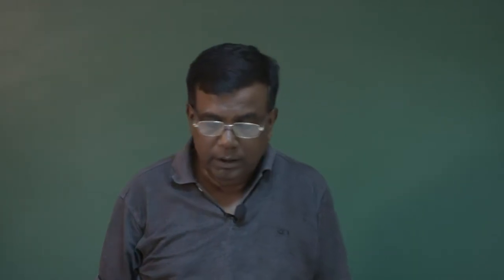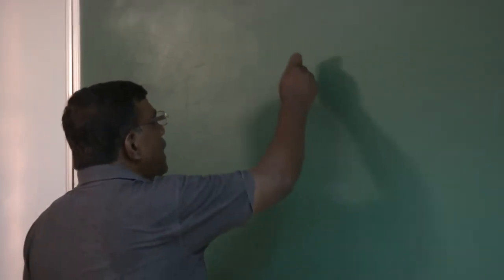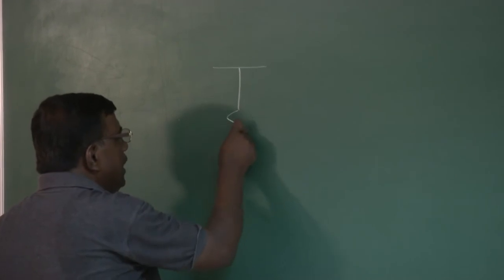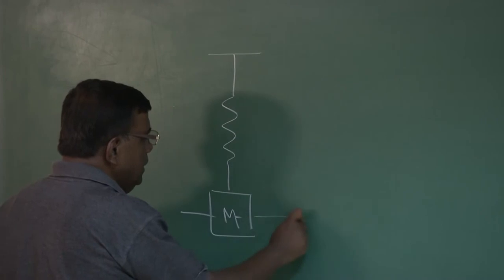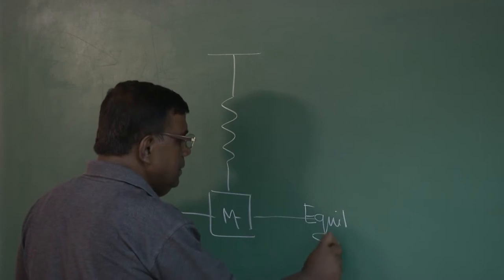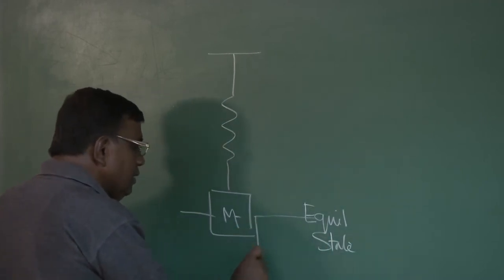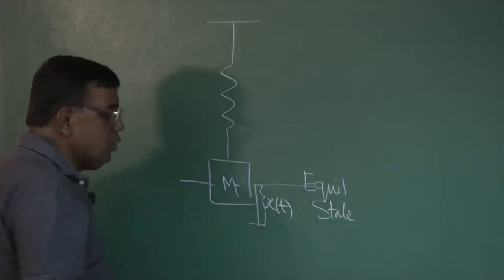Good afternoon friends. We are continuing our discussion on aircraft dynamic stability. By now we are very clear that our approach will be, as I last said, through the mass-spring-damper system: identify the equilibrium state, perturb it with a small perturbation, and then write the equation of motion.